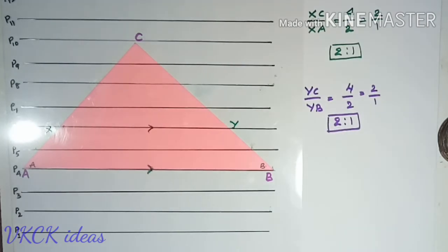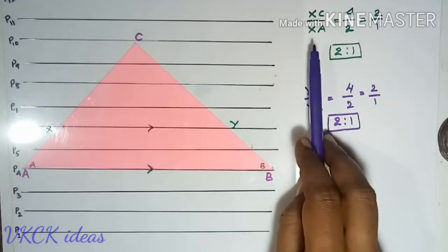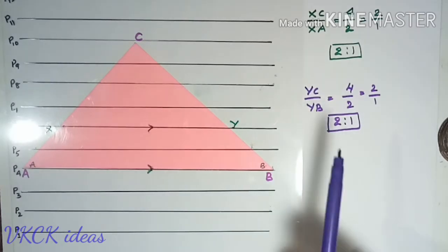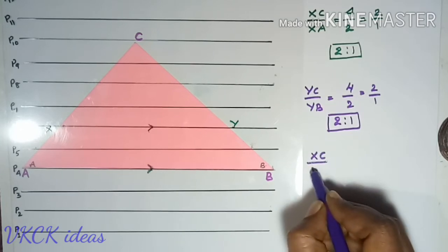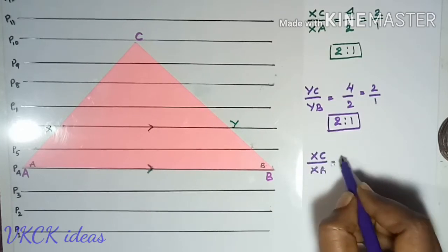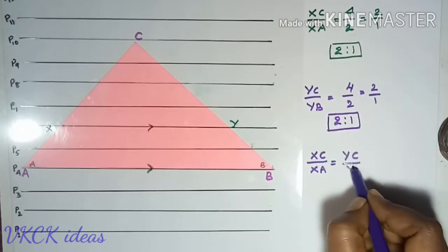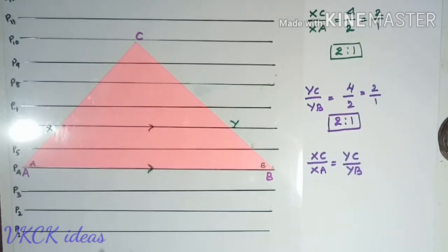Now we have made a small observation that XC by XA is equal to YC by YB. Let us write down our observation: XC by XA is equal to YC by YB. Is it true in other cases also?